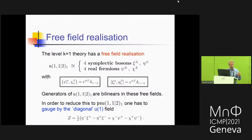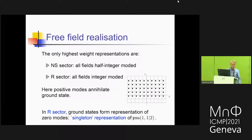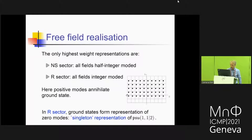Now you want to understand the spectrum of this world sheet theory in terms of these free fields. Free-field representation theory is very simple. If you have free fermions, you have a Neveu-Schwarz sector where all modes are half-integer-moded and a Ramond sector where all modes are integer-moded, with typical highest-weight representations generating the full Fock space. These are the only highest-weight representations — you have to choose all fields to be either Neveu-Schwarz or Ramond so that the bilinears are integer-moded. The Ramond sector representation is infinite-dimensional on the ground states because the symplectic boson zero modes move you left and right without terminating.